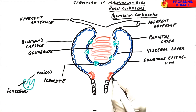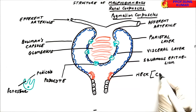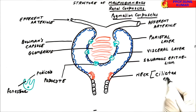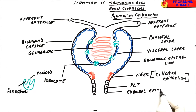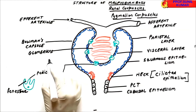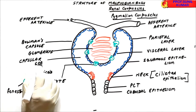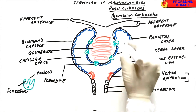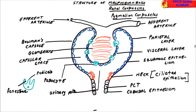The neck of the Bowman's capsule is made up of ciliated epithelium, while the PCT is made up of cuboidal epithelium cells. The space between the parietal and the visceral layer is called the capsular space. The filtrate gets accumulated in the capsular space, and this pole where primary urine gets accumulated is called the urinary pole.